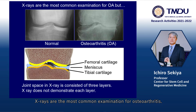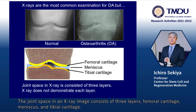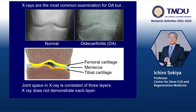X-rays are the most common examination for osteoarthritis. The joint space in an X-ray image consists of three layers: femoral cartilage, meniscus, and tibial cartilage. However, an X-ray image does not demonstrate each layer individually.